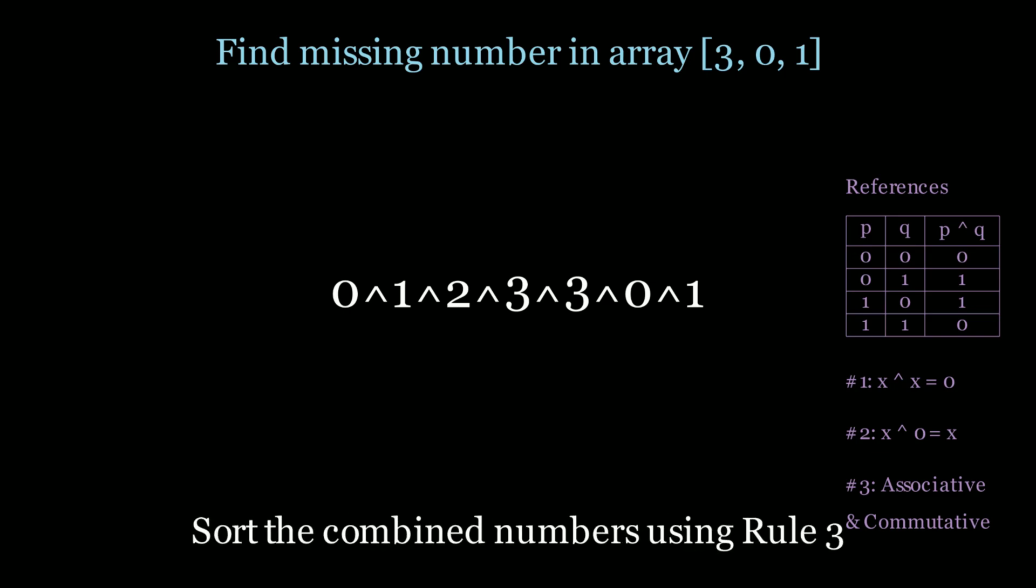So the first thing I want to do is sort these numbers. And I could do that because of rule 3, associativity and commutativity. What this means is that I could change the order of these operations. And I'm gonna combine the like terms. So 0 XOR 0, 1 XOR 1, 2, and 3 XOR 3.